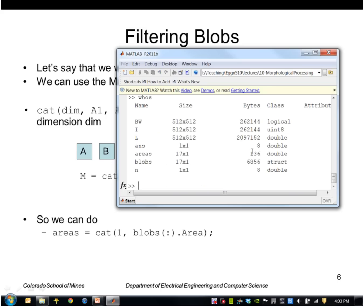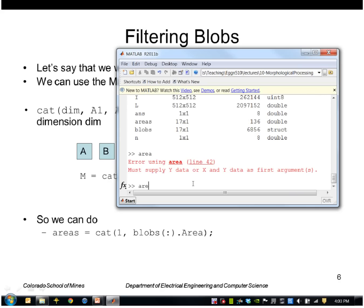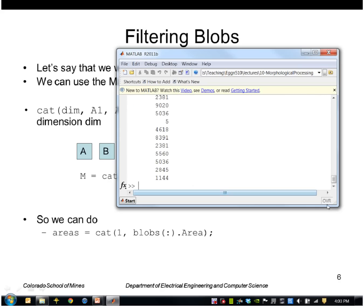Areas equal cat one blobs colon dot area. So now you can see areas. Areas is a 17 by one vector. Here are all the values in that array called areas.